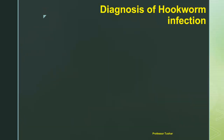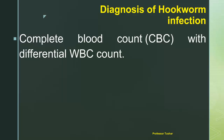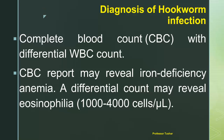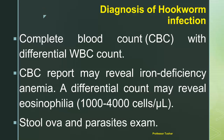Diagnosis of hookworm infection. Complete blood count (CBC) with differential WBC count — CBC report may reveal iron deficiency anemia. A differential count may reveal eosinophilia, 1,000 to 4,000 cells per microliter of blood. Stool ova and parasites exam.